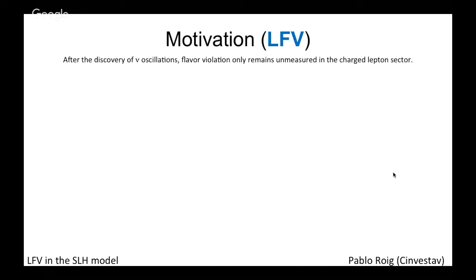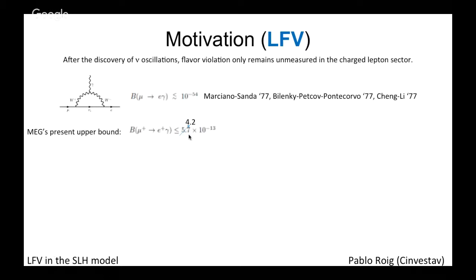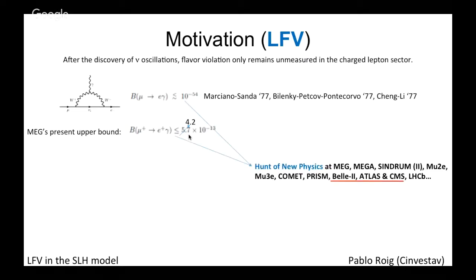After the discovery of neutrino oscillation, flavor violation is not yet measured in the charged lepton sector. In the minimally extended Standard Model with massive neutrinos, the signal is non-vanishing — you can see branching ratios at the level of 10 to the minus 54 — but clearly unmeasurable. So anything you measure is clearly a signal of new physics in processes like μ→eγ, for instance. The experimental effort is to be admired; the upper limit is at the level of 10 to the minus 13.